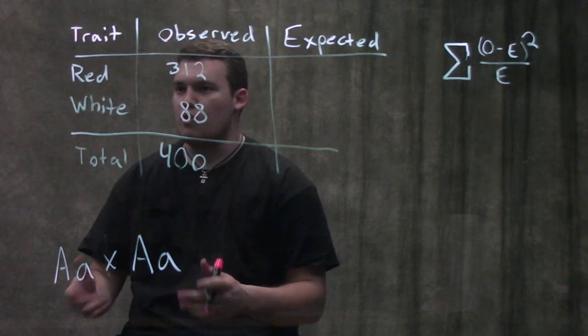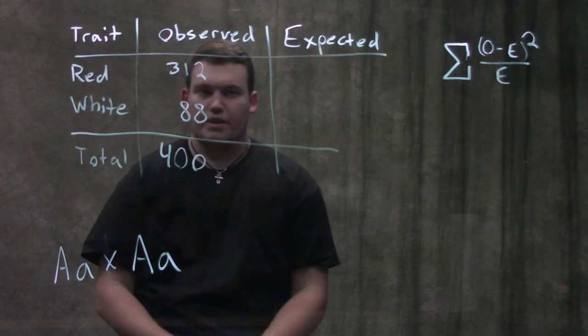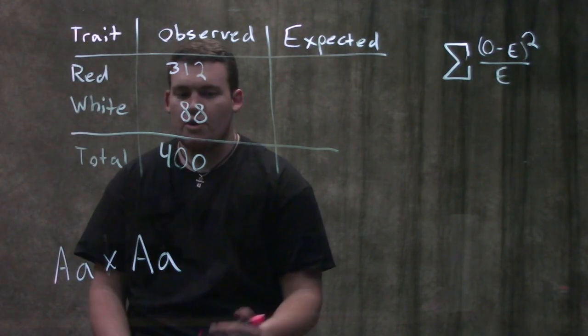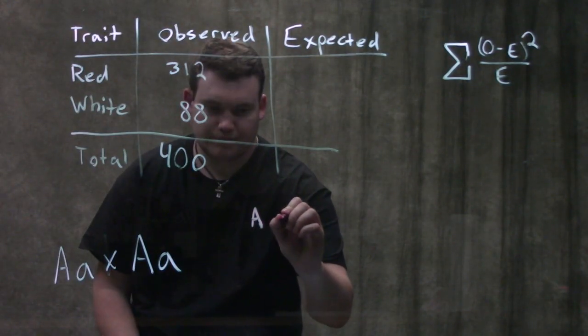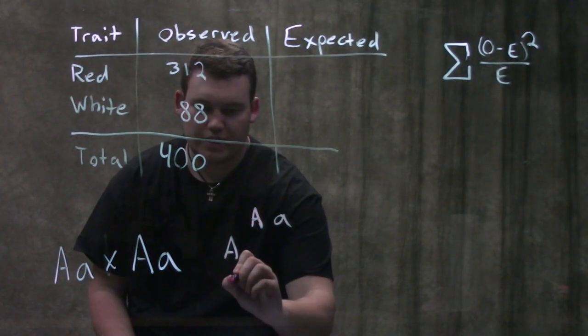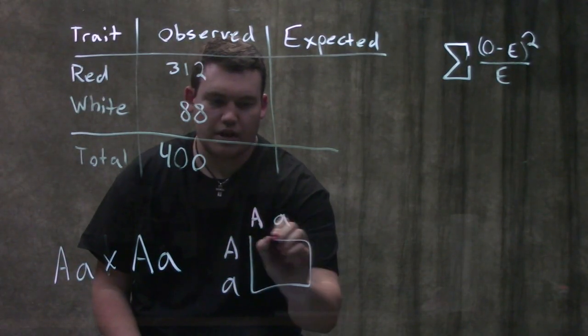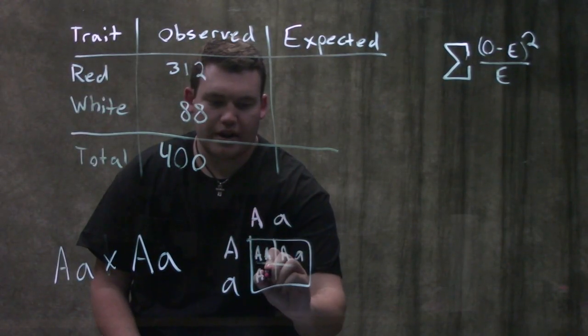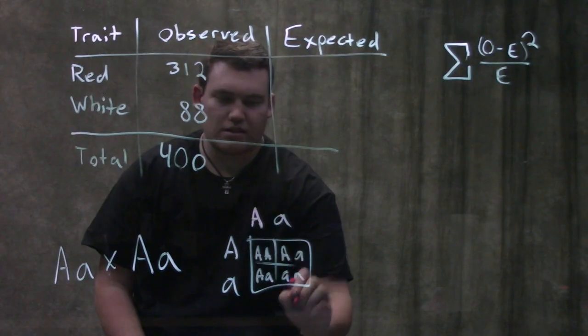Does this follow a normal dominant inheritance pattern? So what we're gonna do is we're gonna first actually cross them. So we can set up a Punnett square right here and once we do that you guys should be pretty fast at this by now.